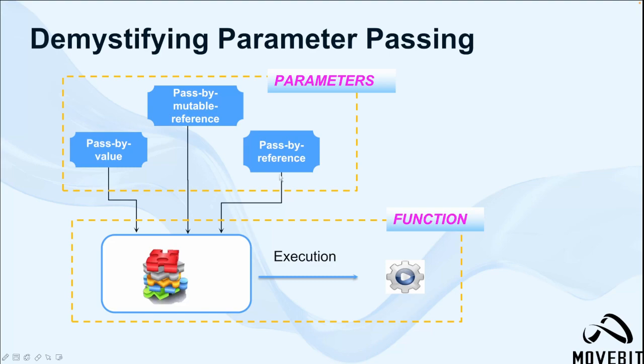And the second one is pass by reference. Contrary, the function receives a reference to the original data rather than a copy. This permits the function to both read and alter the original data. And the third one is pass by mutable reference, another goes to the pass by reference, but it also allows the function to modify the original data. This method is prevalent in languages like Rust.